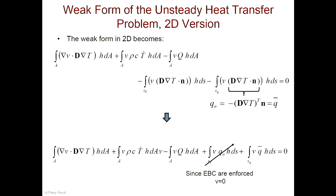Because of that — because the basis functions have to be zero at locations where the primary variable of interest is specified — it follows that this term must go to zero. It cannot be other than zero. So we are now ready to apply finite elements to this problem because I have the weak form.